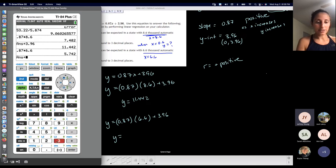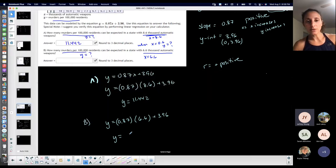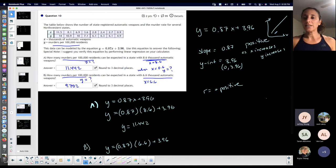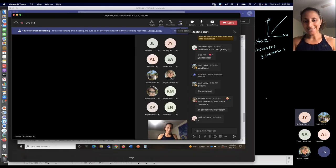I'm just plugging it into my calculator: 9.702. They want me to round to three digits, so that's it. This does make sense that it would be less than part A because the amount of automatic weapons decreased, and being that if x is going down, y should also go down. Let me stop recording.